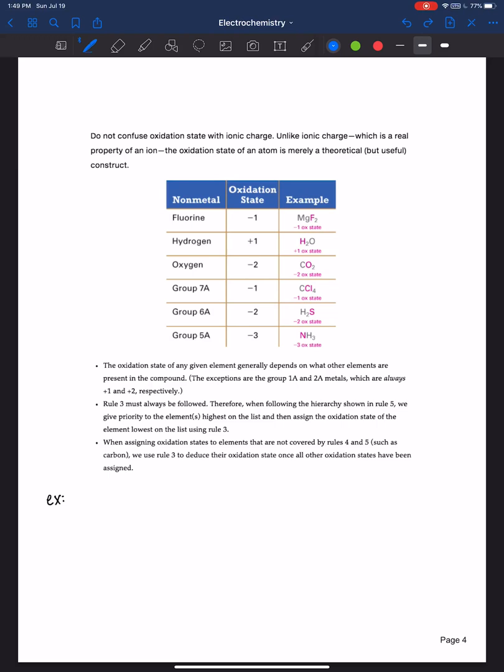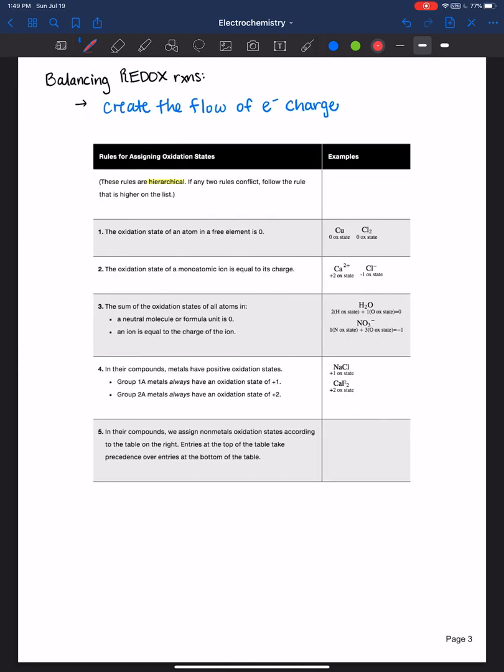Let's do an example. Let's say we have hydrogen gas plus chlorine gas to make hydrogen chloride gas. And we want to assign oxidation states. Hydrogen gas and chlorine gas are actually in their most natural elemental form. They're diatomic gases. So we would assign them an oxidation state of zero because they're in their free element form.